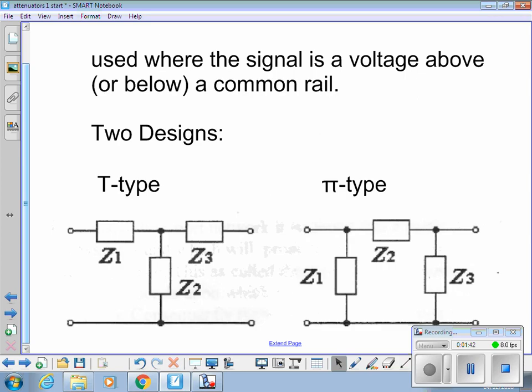So there are two designs, a T-type design, aptly named because it looks like a T. It has two series resistors. I'm going to use this terminology because the calculator we're going to use uses this terminology. The parallel resistor is called the shunt resistor. So a series in, series out, and a shunt.